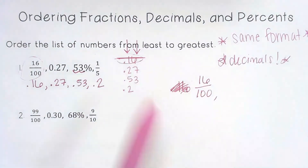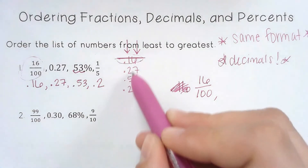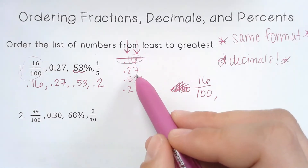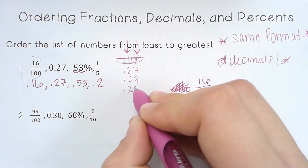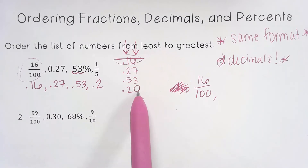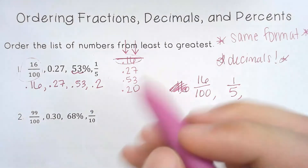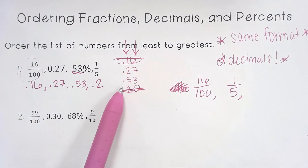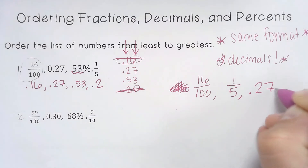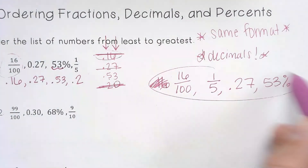Looking at our tenths place, we have a 1, a 2, a 5, and a 2. The 1 is the smallest, so 0.16 is our smallest number — that goes first, and I should convert it back to what it originally was: 16 over 100. Now looking at the remaining tenths place, we have a 2, a 5, and a 2. Since the 2s are the same, we move to the hundredths place — we have a 7 and nothing. Remember, if there's nothing I can put a 0 there. So 0 is smaller than 7, meaning 0.2 — which was 1 fifth — is next. Then 0.27 is next, and the largest number was 53%.